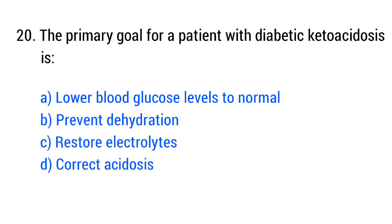Question number 20. The primary goal for a patient with diabetic ketoacidosis is. The right answer is option D: Correct acidosis.